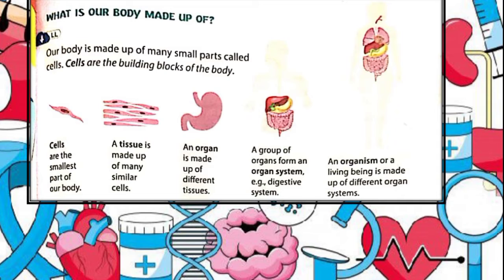An organ is made up of different types of tissues. Your heart, lungs and bones are just a few parts that make up an organ system.